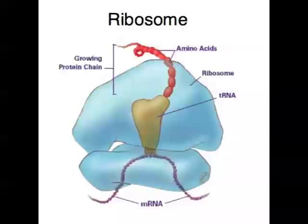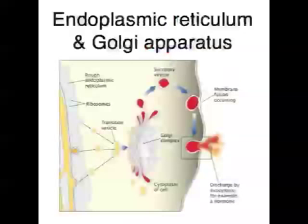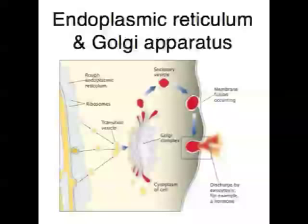Ribosomes make proteins and are made up of rRNA, or ribosomal RNA, and protein. When proteins need to be transported, two other organelles come into effect. The endoplasmic reticulum transports proteins made by ribosomes within the cell, and then in the Golgi apparatus the proteins are packaged into secretory vesicles and discharged from the cell via exocytosis.